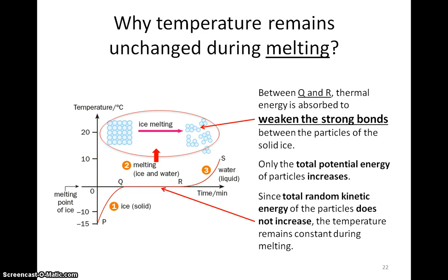When we heat the substance from Q to R, the temperature of the substance does not change. Hence, the random KE of the particles does not change too. But where does the thermal energy from the heating go? It turns out that the thermal energy is used to weaken the strong bonds between the particles, and the particles in ice move further apart. Hence, the potential energy of the particles increases.